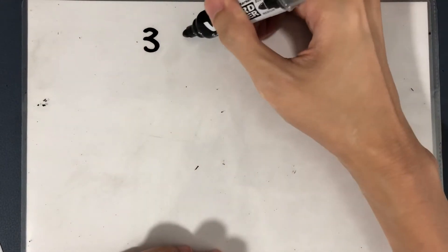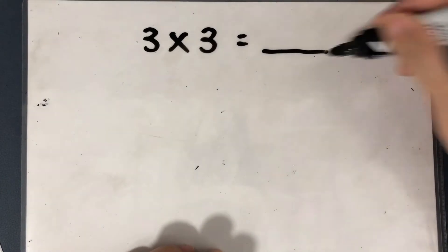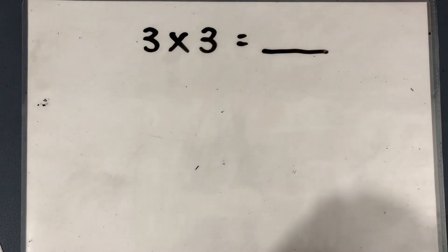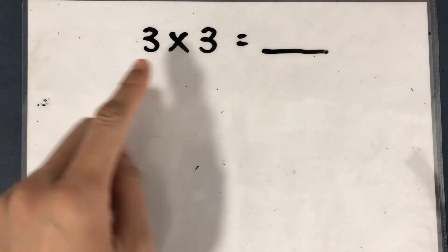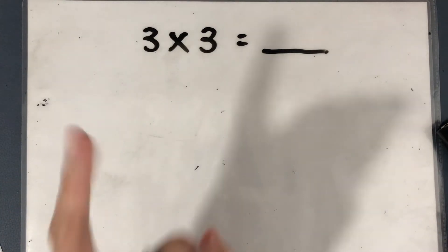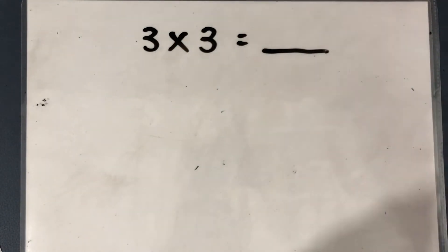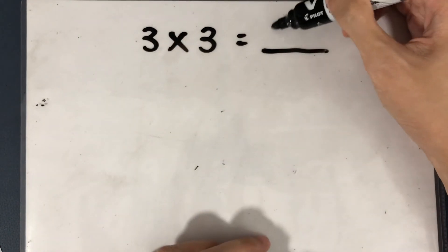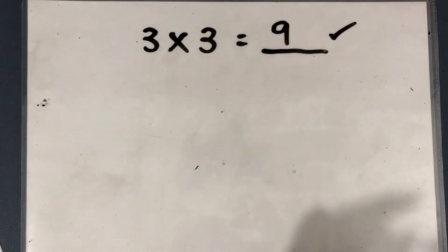What is 3 times 3? A simple one to start off. 3 fingers on the 3 times table — pause the video and try it on your own before I go through. So, 3 fingers: 3, 6, 9. The answer is 9. If you got this answer, give yourself a pat on the back.